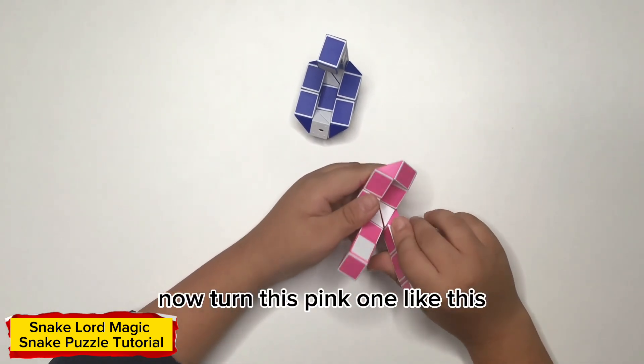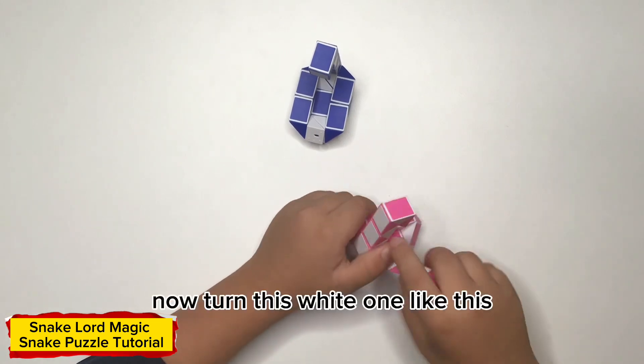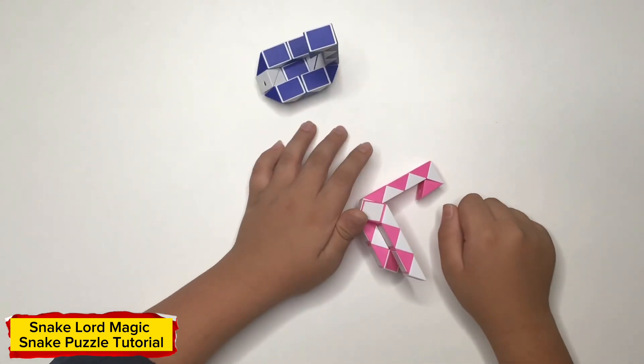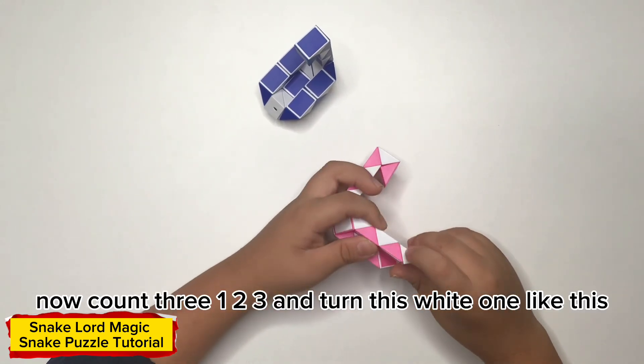Now turn this pink one like this. Now turn this white one like this. Now count four: one, two, three, and turn this white one like this.